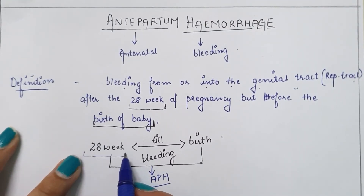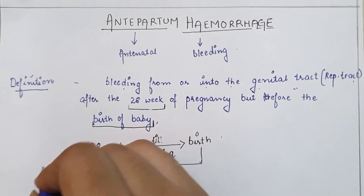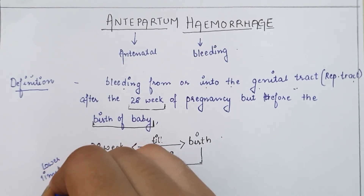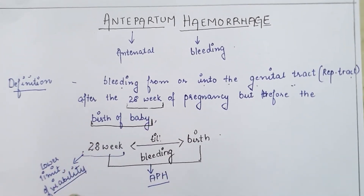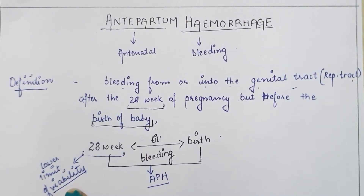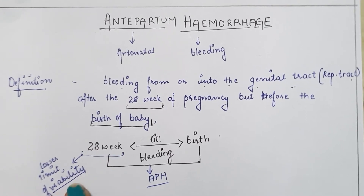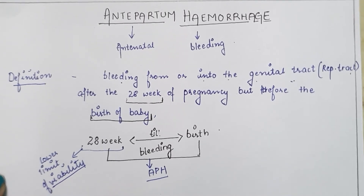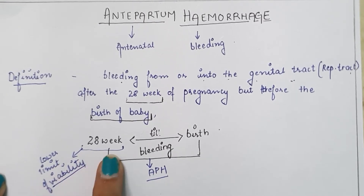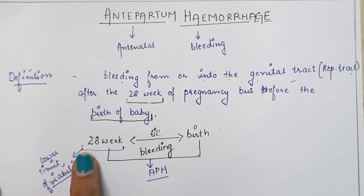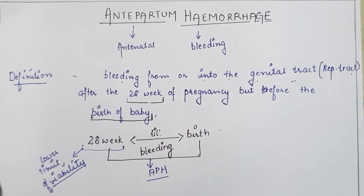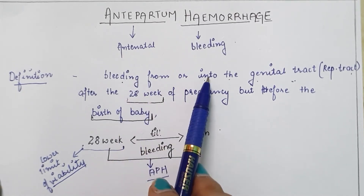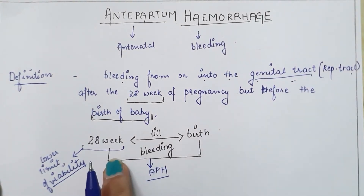The 28th week is considered as the lower limit of viability. Viability means the baby is able to survive outside the womb. According to most studies, the lower limit of viability is 24 weeks, but in antepartum hemorrhage, the 28th week of pregnancy is considered as the lower limit of viability.